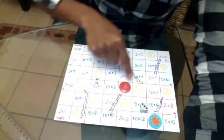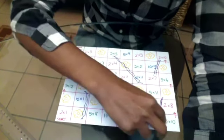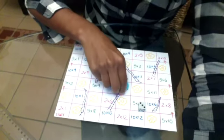And the aim is to get to finish. So you can see who wins this game. And you can play as many times as you want to practice your two, five and ten times tables.